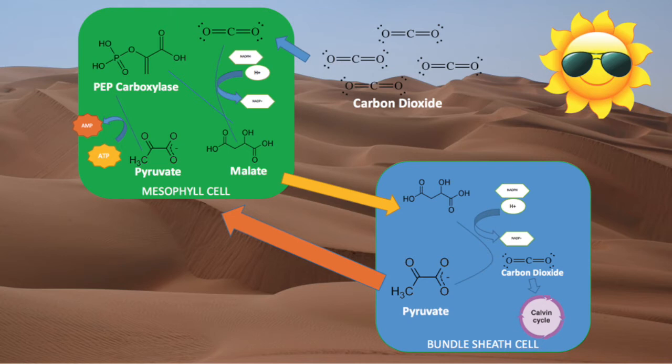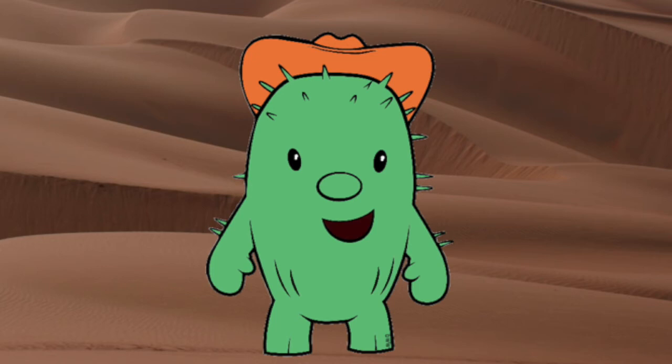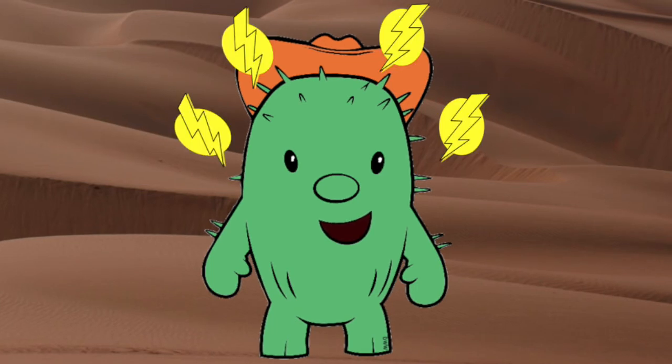Here is an overview of the C4 process. I am able to live in hot and dry areas because I don't lose energy and carbon to photorespiration, and I can carry out photosynthesis while my stomata are partly closed.